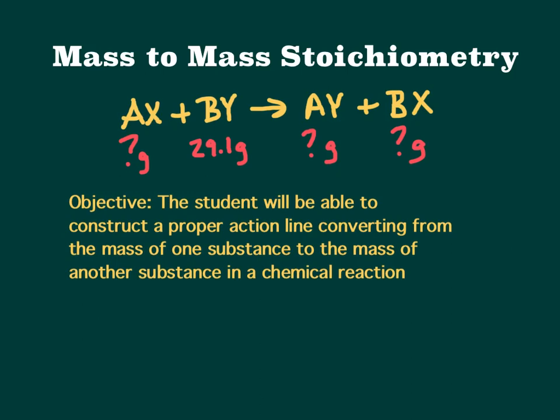It's the most common type of stoichiometry problem that you'll see. It's where you're given grams of one substance in a chemical reaction, like this, 29.1 grams, and you might be asked to find the grams of any other substance in that chemical reaction.